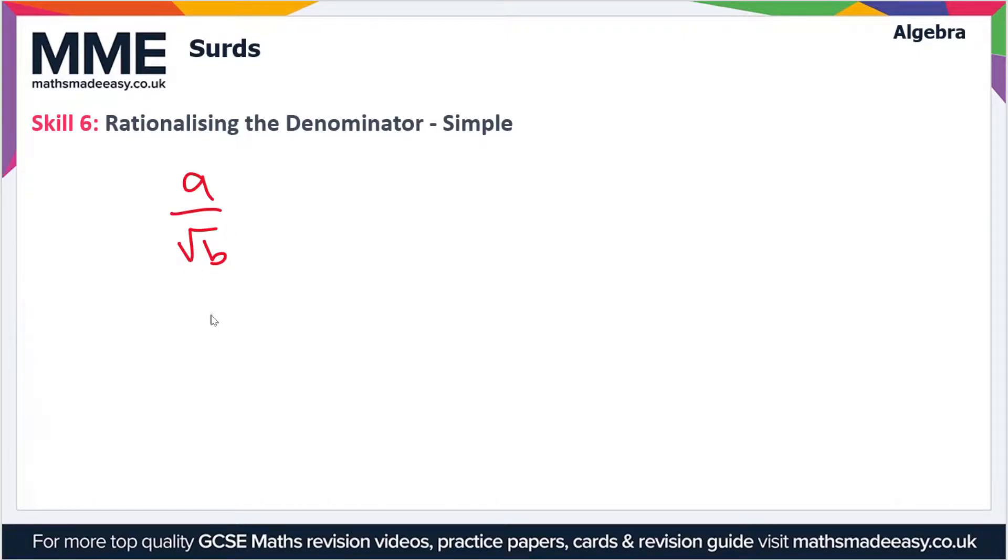So surds are irrational numbers, so removing the surd from the denominator is known as Rationalising the Denominator. So how are we going to do this?